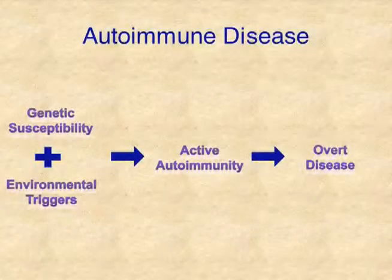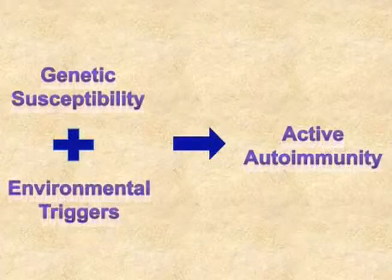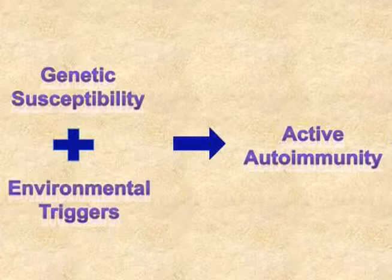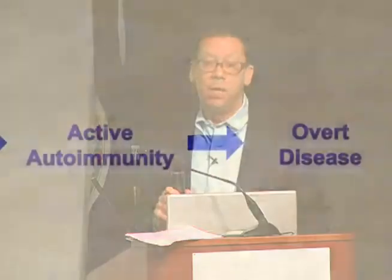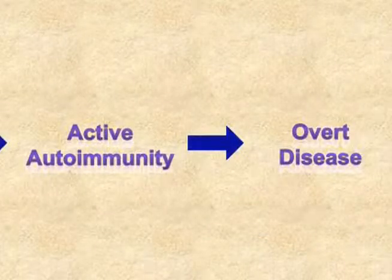The way we used to think about things: you've got genetic susceptibility — that is, you have a tendency toward expressing these genes. There's some environmental trigger that occurs. There's an activation of the immune system as a result of the interaction of these two things. And then, ultimately, there's the occurrence of overt disease.